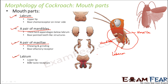The fourth mouth part is the labium, which is nothing but the lower lip. So labrum is the upper lip and labium is the lower lip. Together, they enclose the mandibles and maxillae in between. The labium bears taste receptors, allowing the cockroach to detect taste.